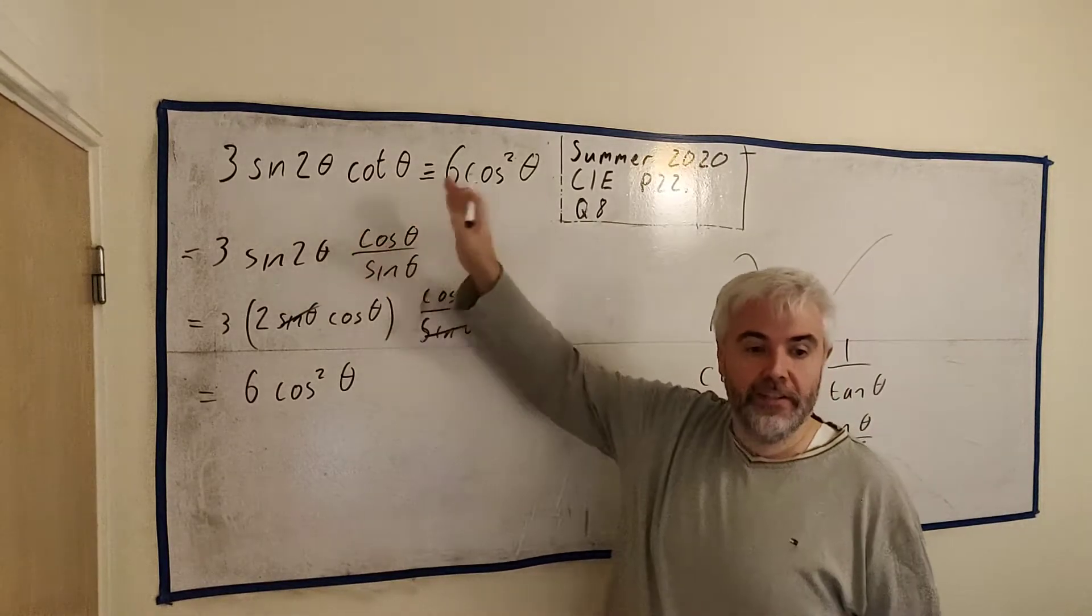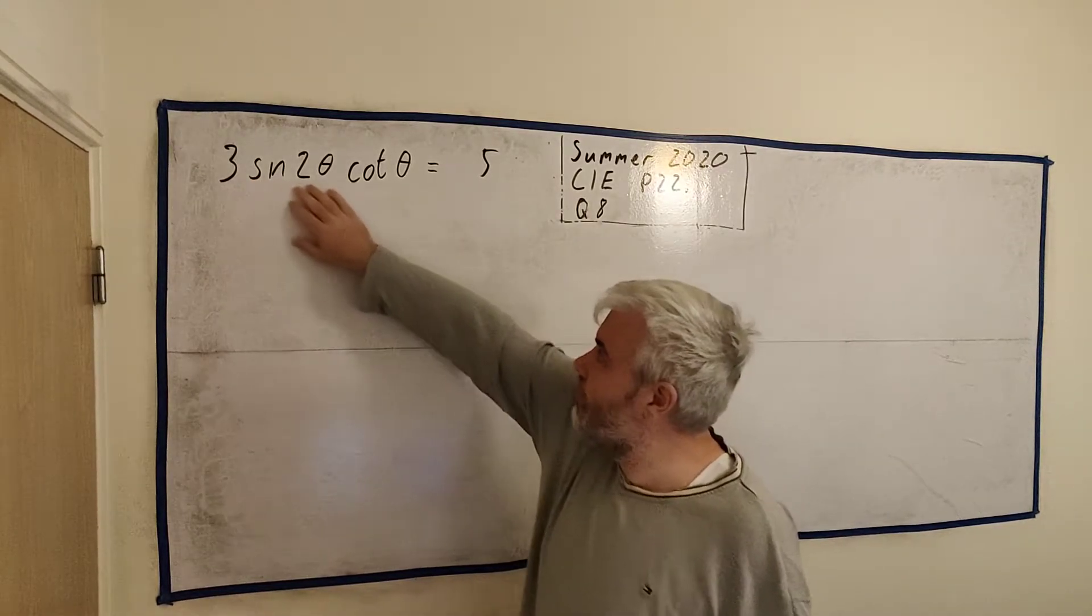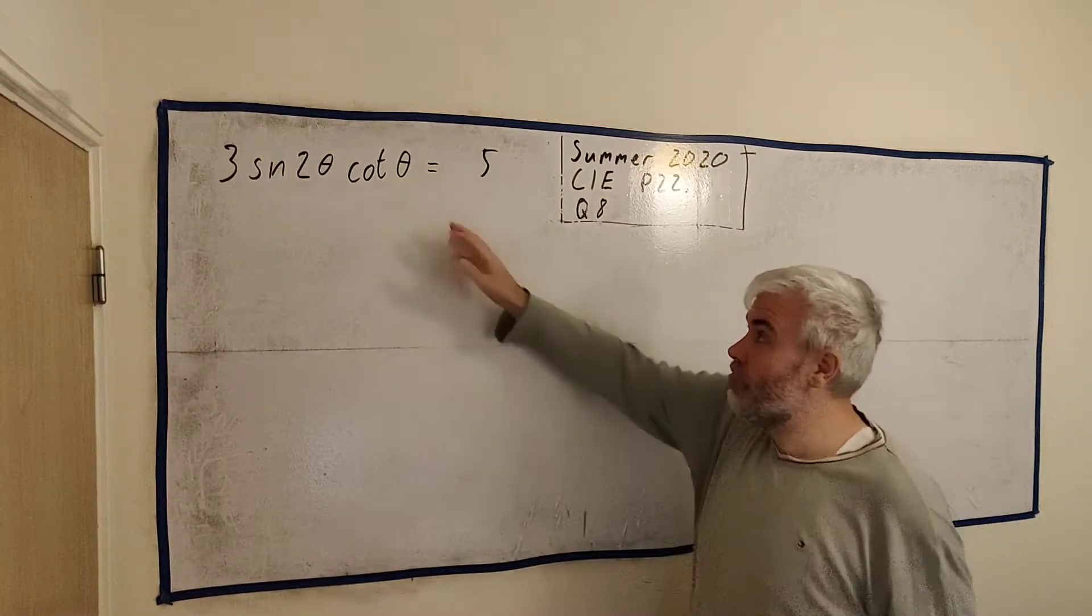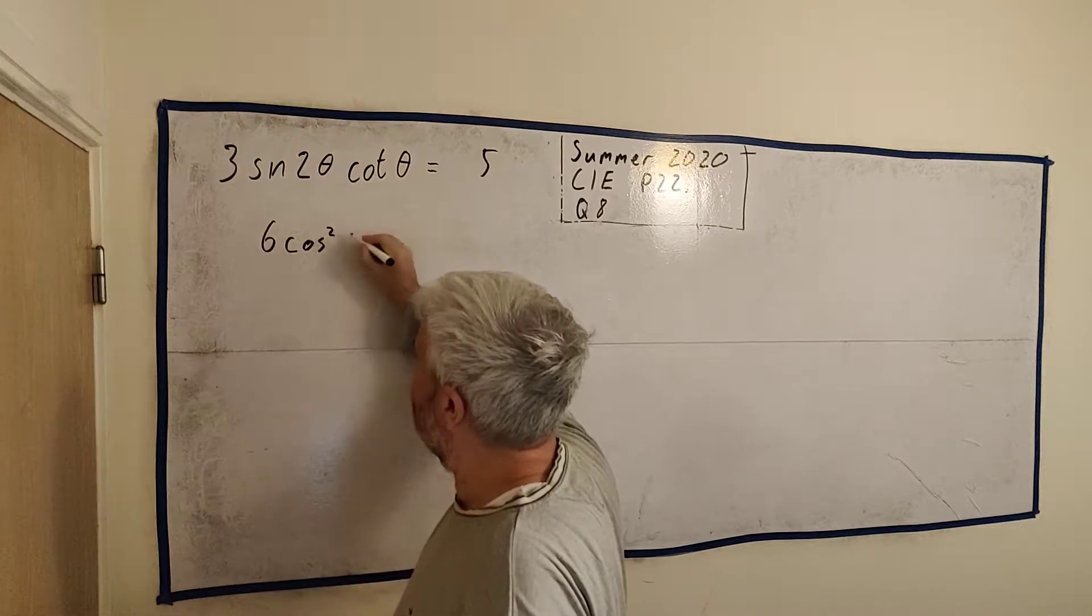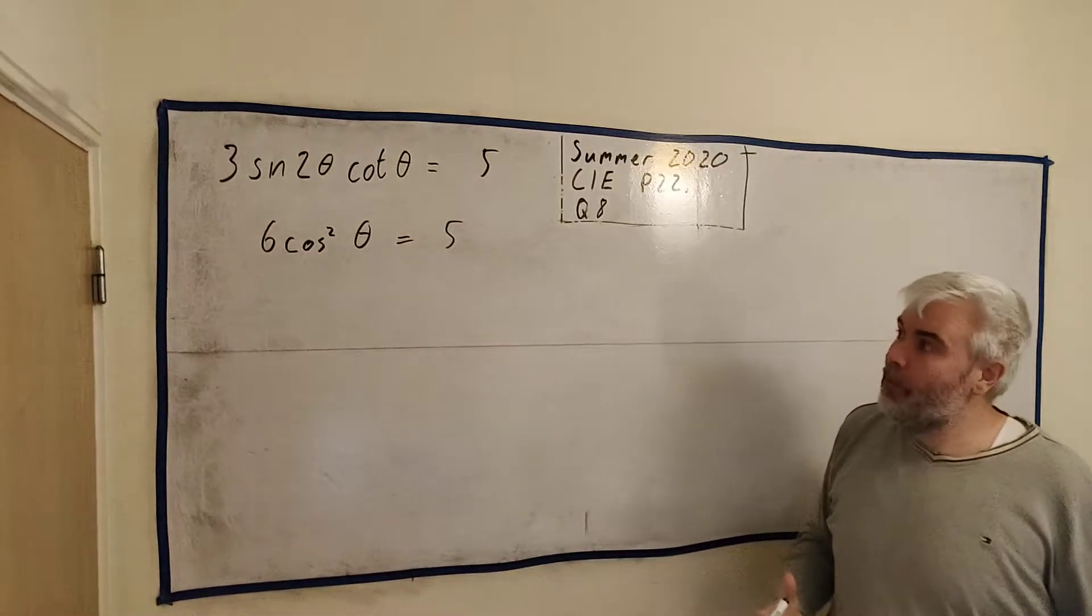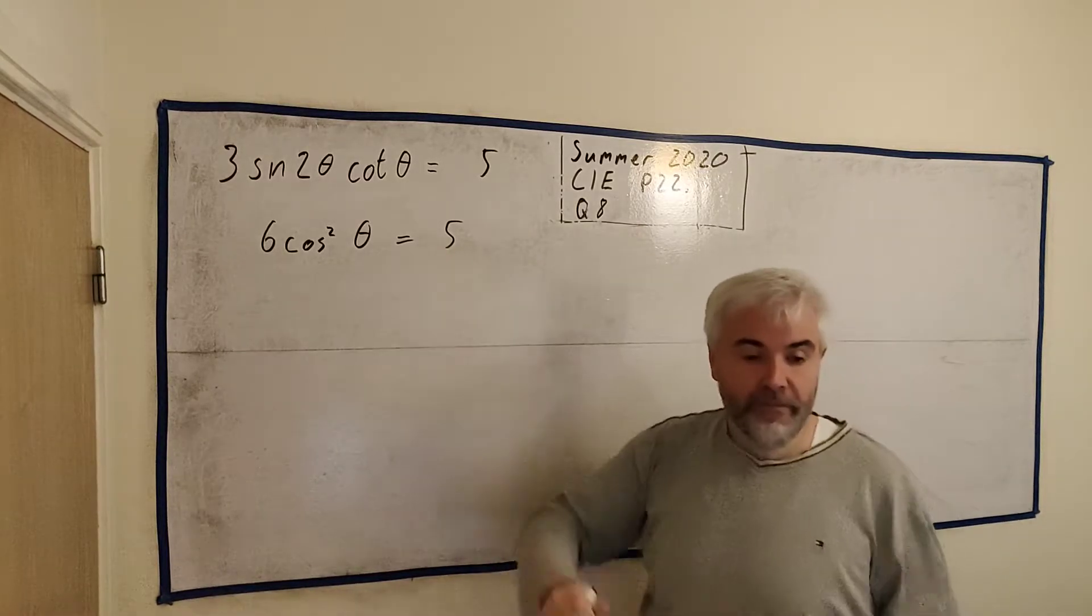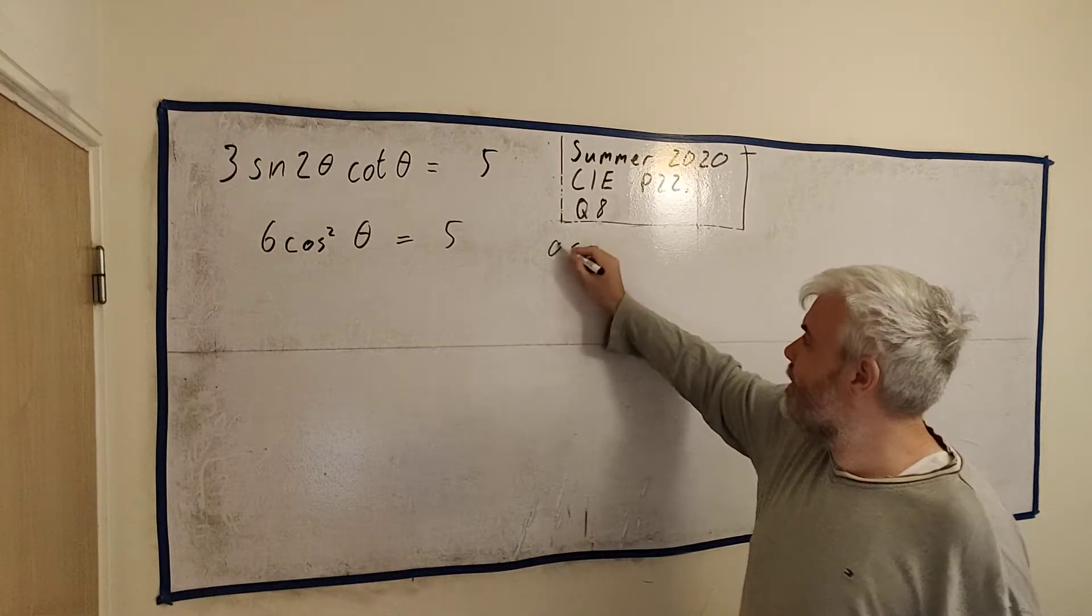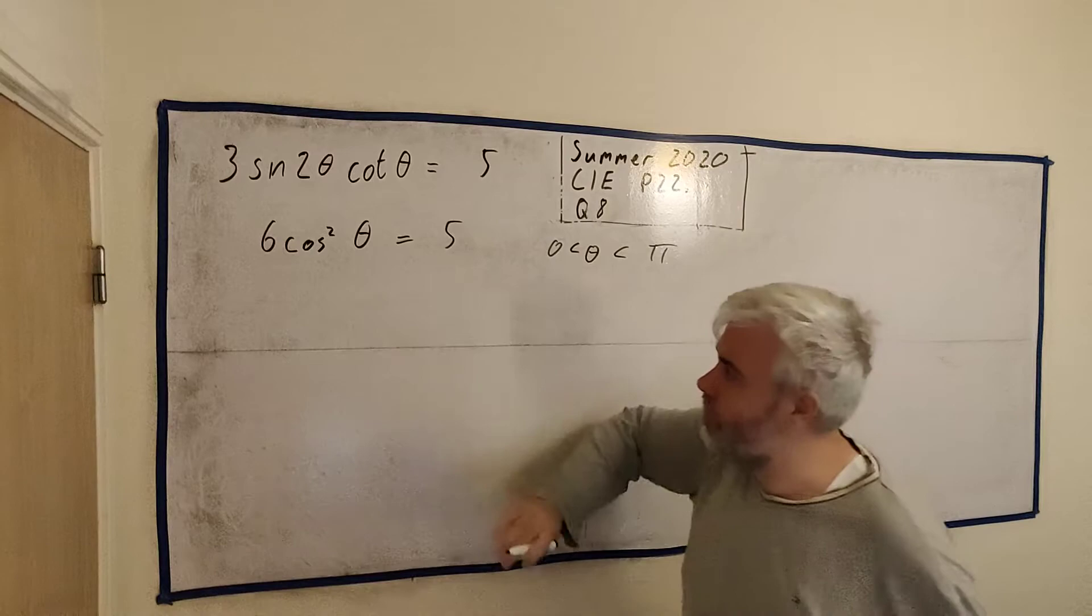Now in part B, they ask us to solve this equation here. That 3 sine 2θ cotangent of θ is equal to 5. Now the clue here is, they've just used this in part A. They said this is the exact same as 6 cosine squared θ. So let's not use this. Let's not solve this equation. Let's solve this one here. That's going to be much easier. So if you did not know how to do part A, you're still able to do part B. Part B, you have all the information you need to try and do part B. This is, they only want θ between 0 and π. So bear that in mind. That's going to change our answers a lot. So let's just try and solve this equation.